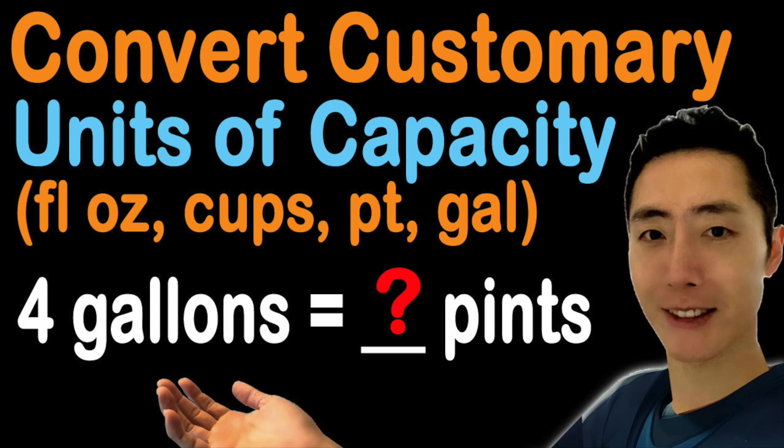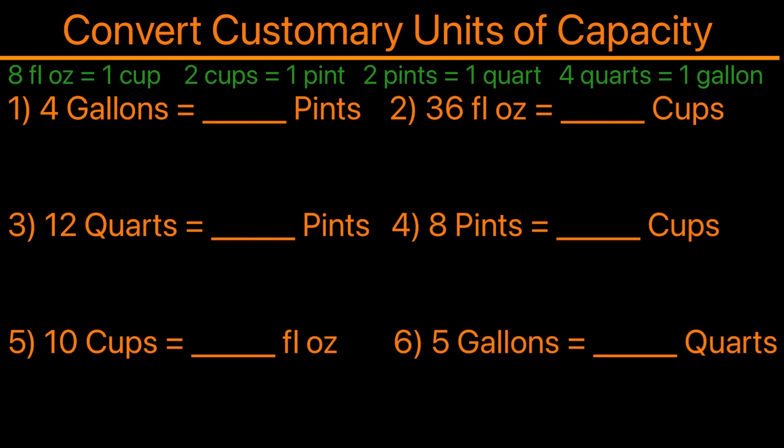In this video I'll be going over how to convert customary units of capacity. We're going to convert ounces to cups, cups to pints, pints to quarts, and quarts to gallons. The conversions are: eight ounces equals one cup, two cups equals one pint, two pints equals one quart, and four quarts equals one gallon.